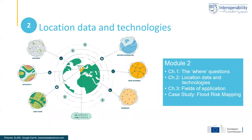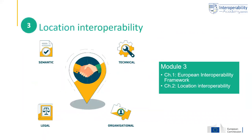Module two is about location data and technologies. We start with a chapter introducing many different types of 'where' questions, and then in chapter two we introduce what location data and technologies are and explain how these data technologies can help in addressing and solving these questions. A third chapter looks at the different fields of application, and this module also includes a case study on flood risk mapping. Module three is all about interoperability and location interoperability in particular, with one chapter introducing and explaining the European Interoperability Framework, and a second chapter looking at what interoperability means in the context of location.